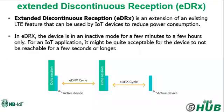Extended DRX, or eDRX, is extended discontinuous reception — an extension of an existing LTE feature that can be used by IoT devices to reduce power consumption. For IoT machine-to-machine devices, a delay of a few seconds or minutes in receiving incoming packages is most often not crucial.